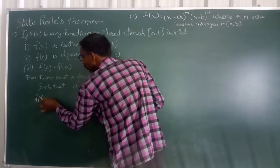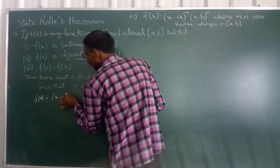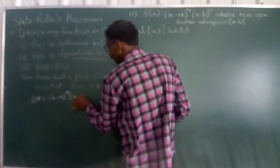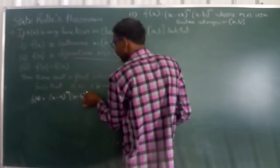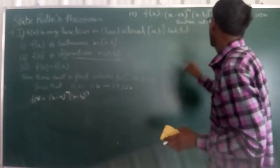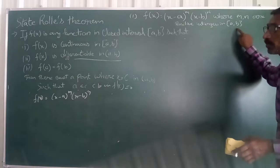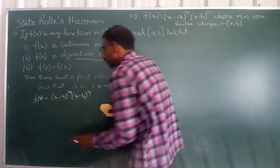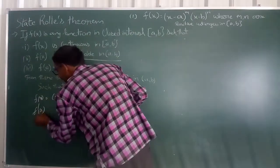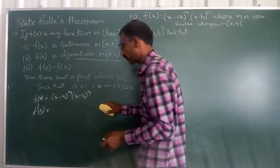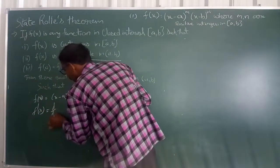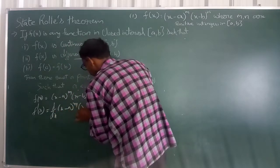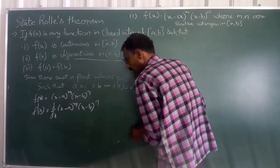f(x) = (x - a)^m · (x - b)^n. The given interval is [a, b]. We have to find f'(x), that means the derivative of f(x). We should write d/dx of (x - a)^m · (x - b)^n.